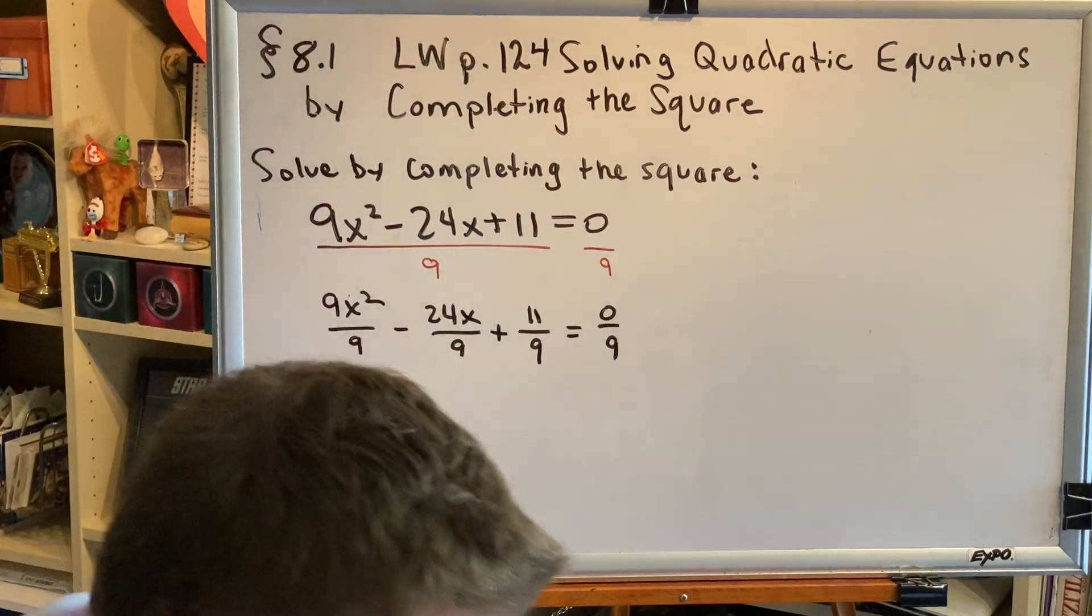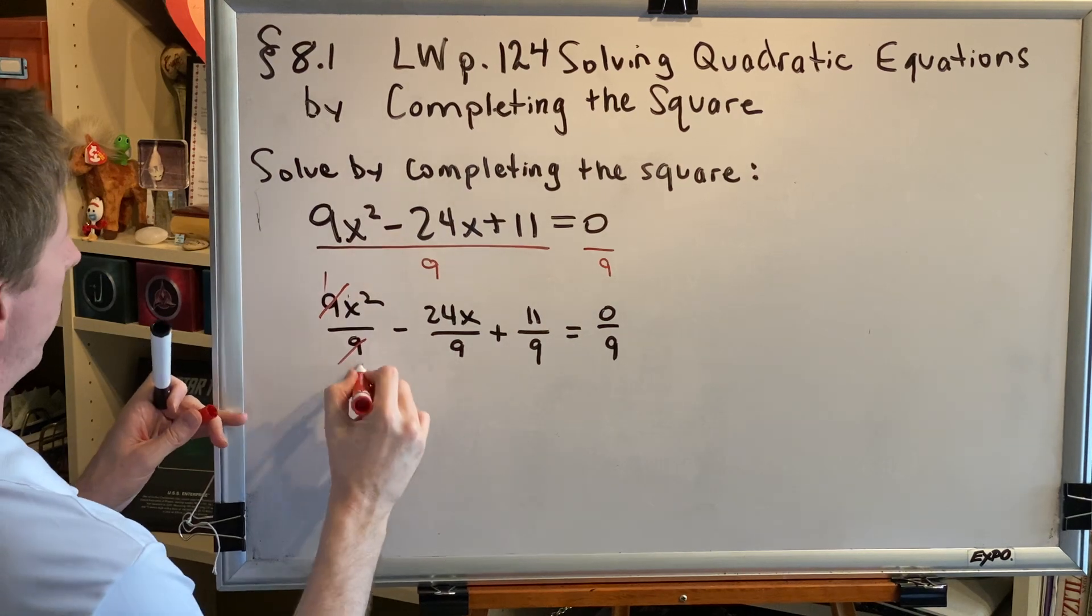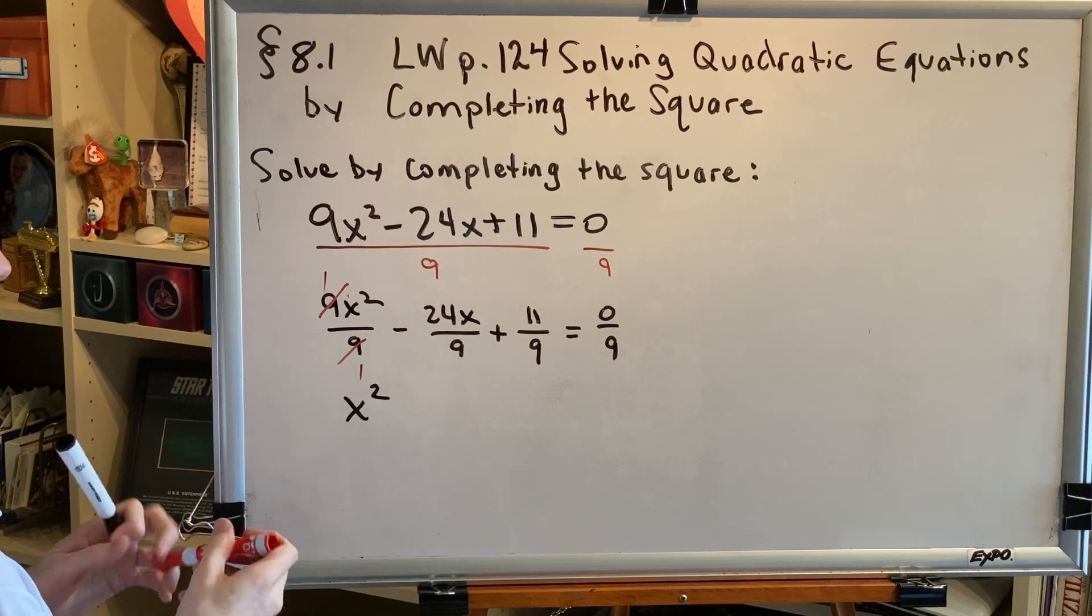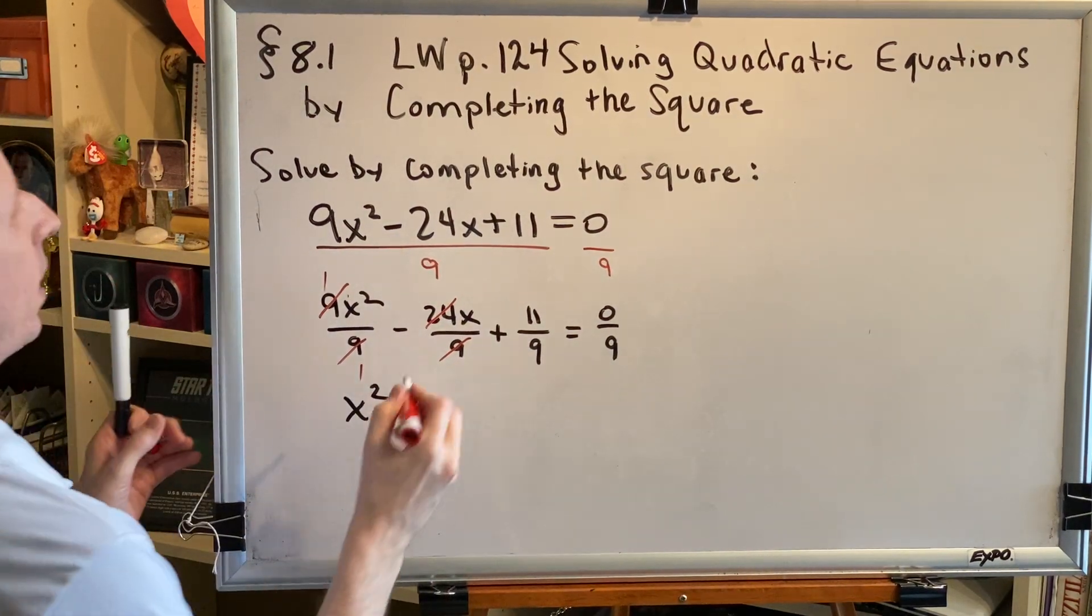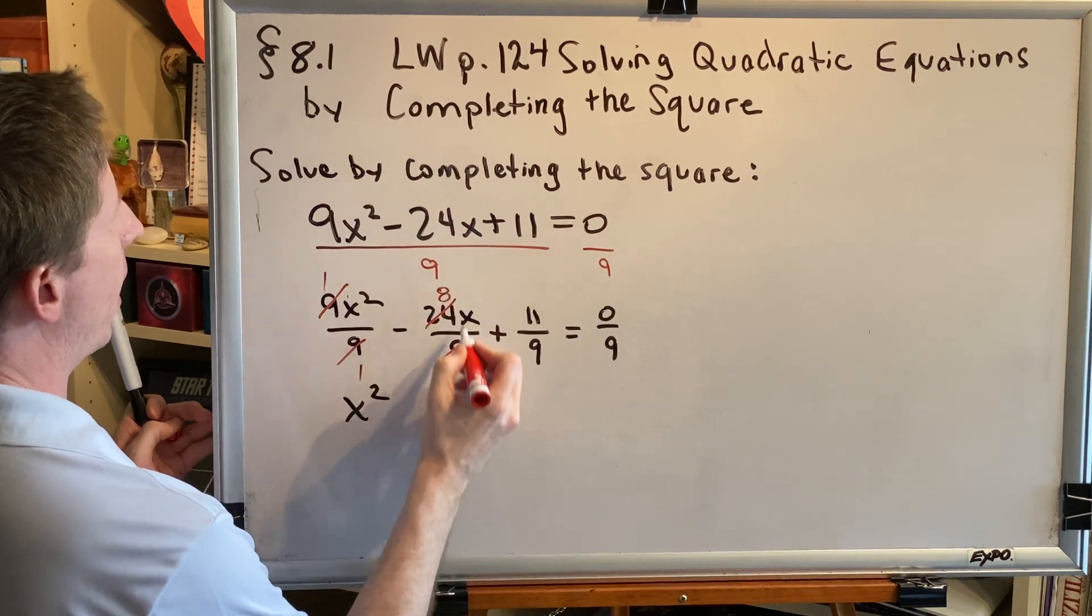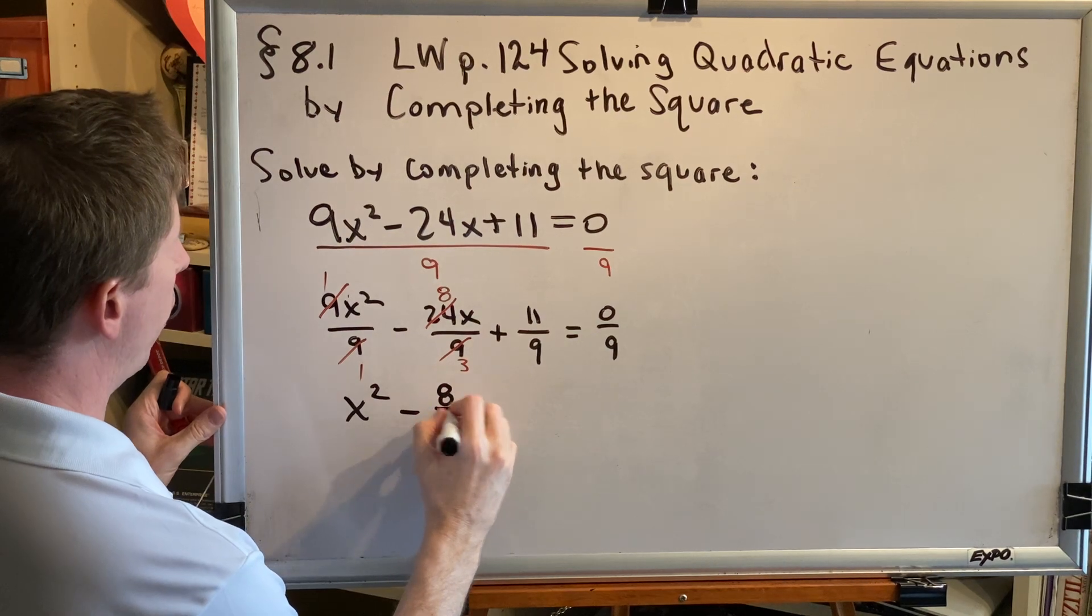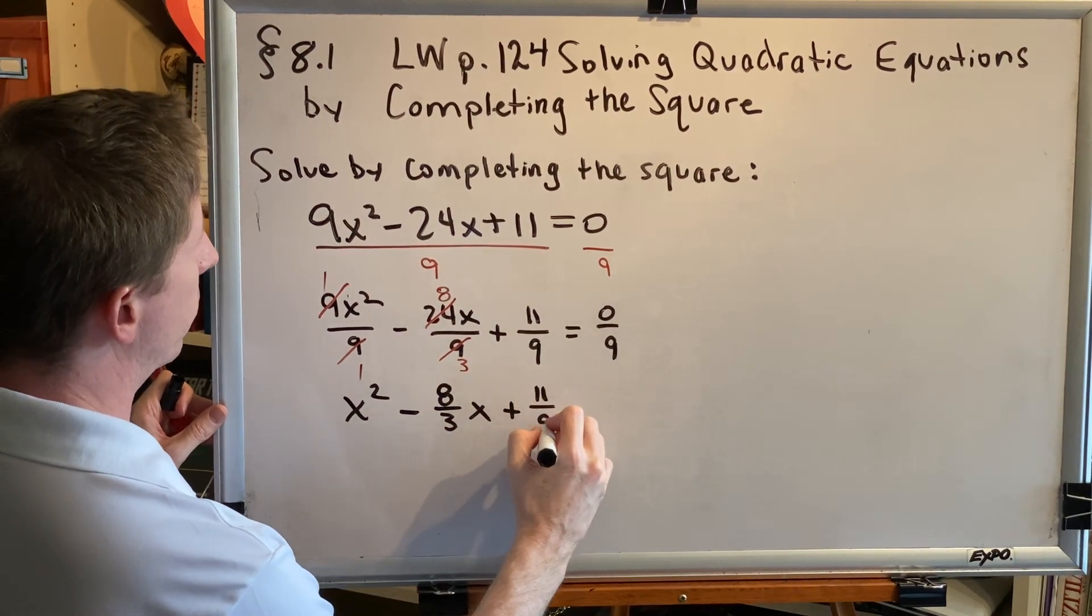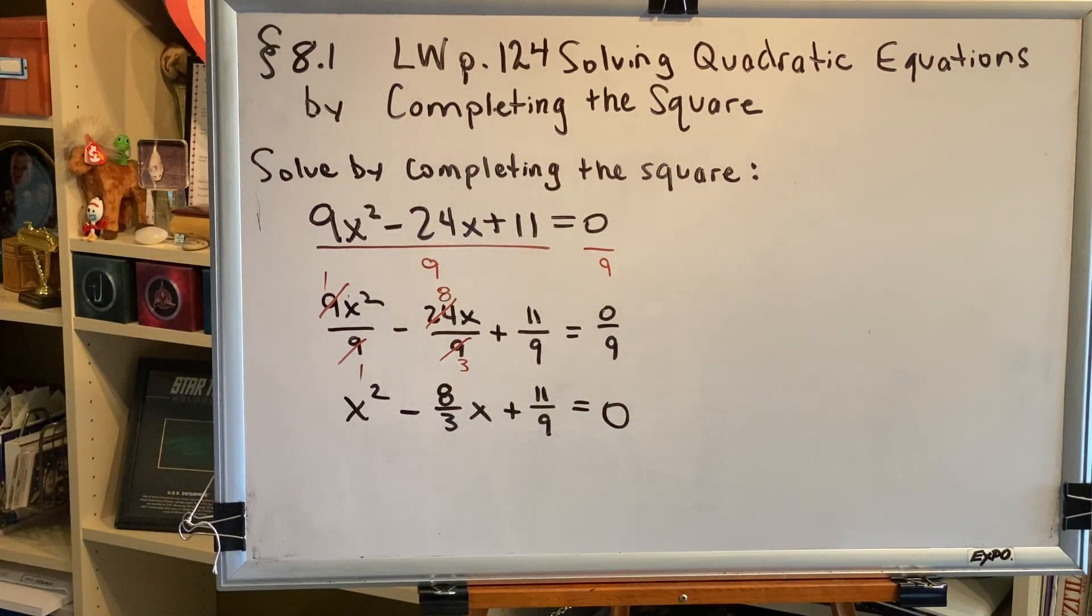Alright, so now we can do some simplifying. This 9 and this 9 cancel to 1, so that just leaves us x squared. We can reduce this fraction. The common factor of 24 and 9 is 3. When you take out the 3, you get 8 over 3. So this could be written as minus 8 thirds x plus 11 ninths equals 0, because 0 divided by 9 is 0. Okay, so that was step 1.